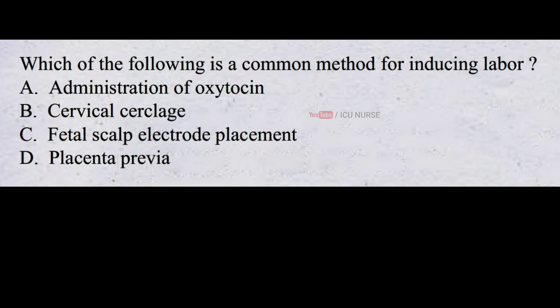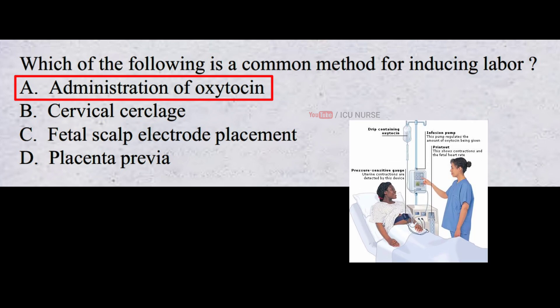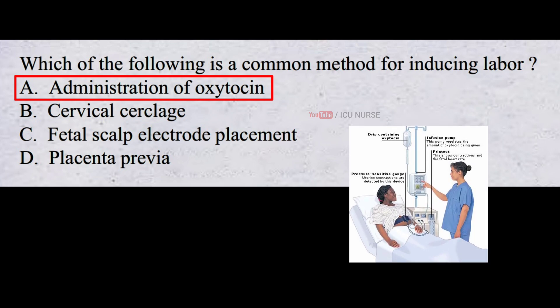Which of the following is a common method for inducing labor? A. Administration of oxytocin. B. Cervical dilation. C. Fetal scalp electrode placement. D. Placenta previa. And the correct answer is A. Administration of oxytocin is the common method for inducing labor.